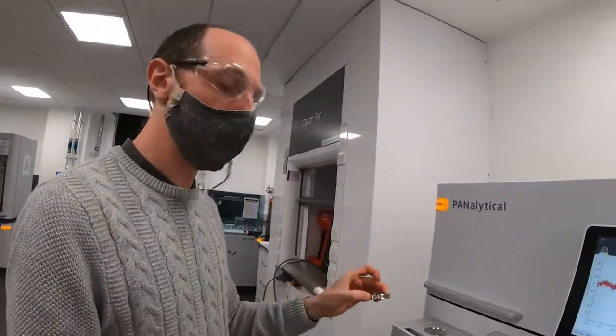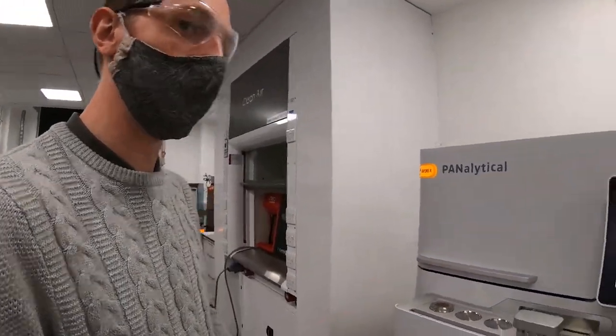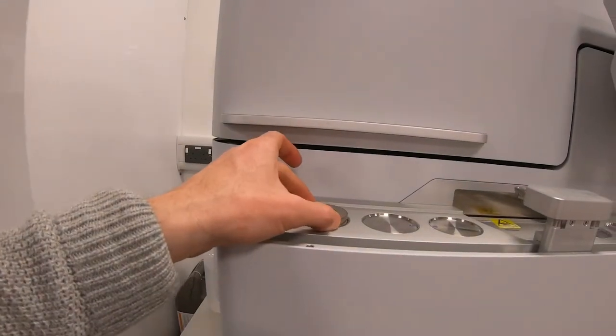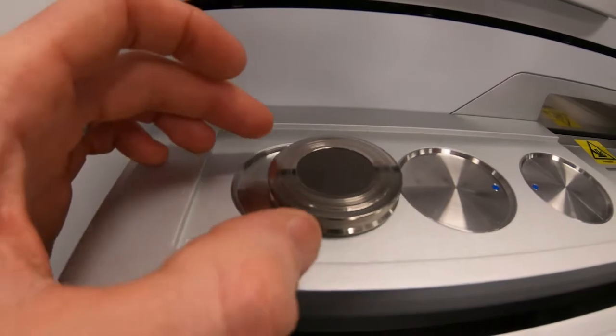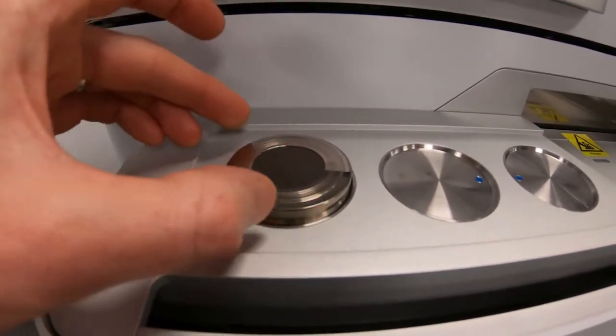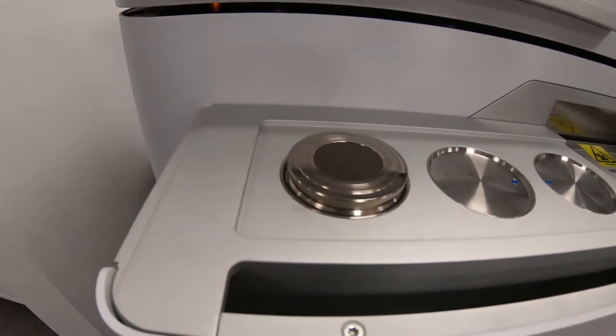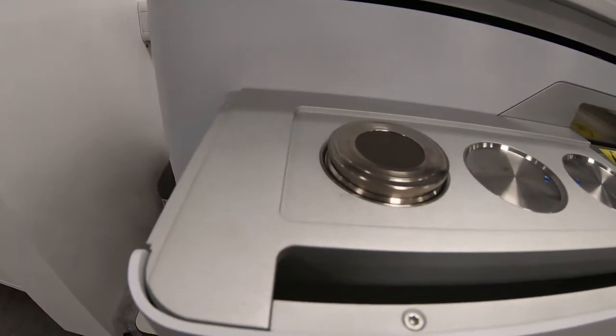So after you've prepared your sample, it's time to load it onto the machine. I have my standard sample here. It's just as simple as placing it into position. You drop it onto the circle, make sure it's nicely centered, not leaning on the edge like that. The machine won't pick it up. It has to be spot on. Once you've done that, you can select which experiment you want to do.